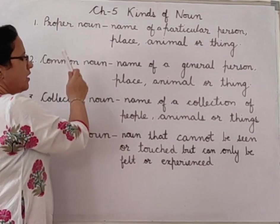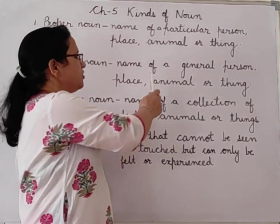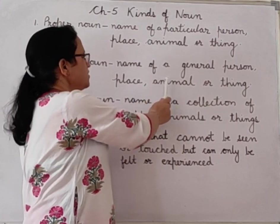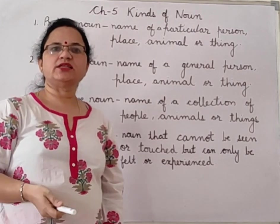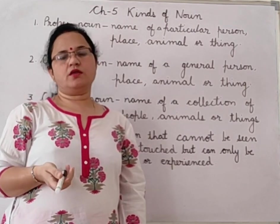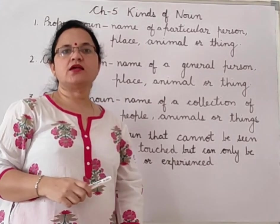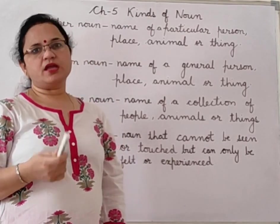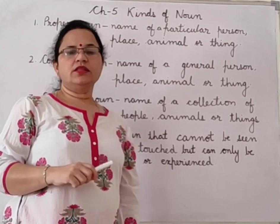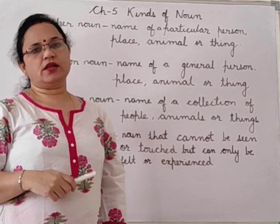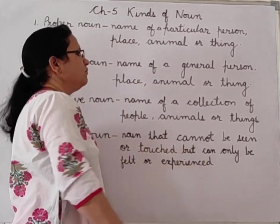Next is common noun. Common noun is when we talk about a person in general — generally, like place, animal or thing. Suppose I say 'boys' — it can be any boys, so 'boys' is a common noun. If I say 'I am going to the city,' it can be any city, so 'city' is a common noun. Now, 'there are so many animals in the jungle' — animal, it can be any animal, so it is also a common noun.